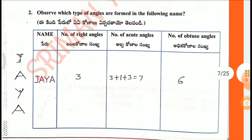Second one: Observe which type of angles are formed in the following name. Jaya: number of right angles — 3, number of acute angles — 7, number of obtuse angles — 6.